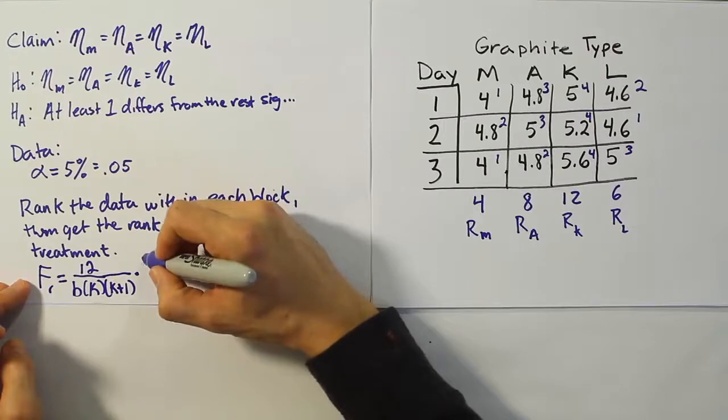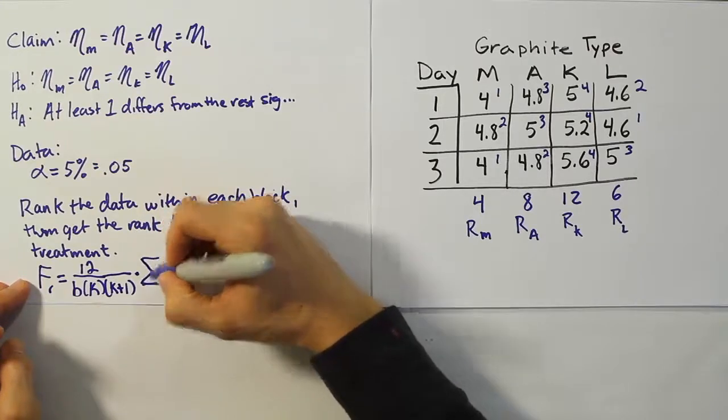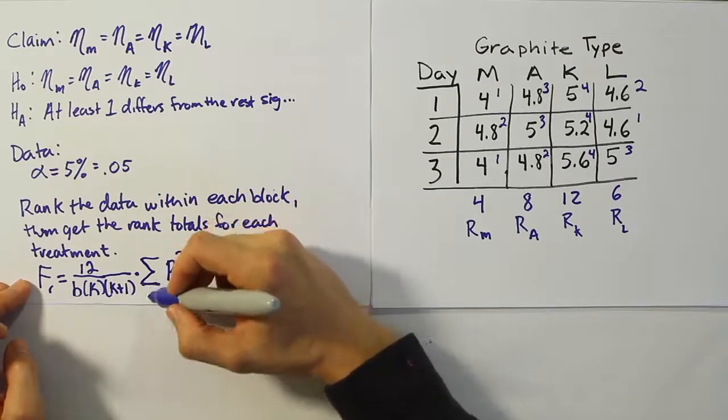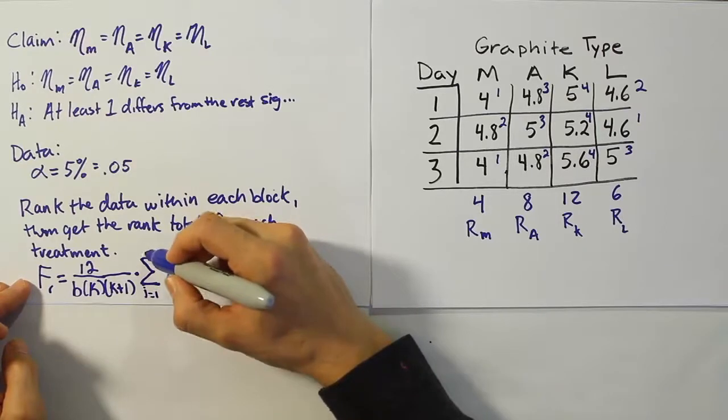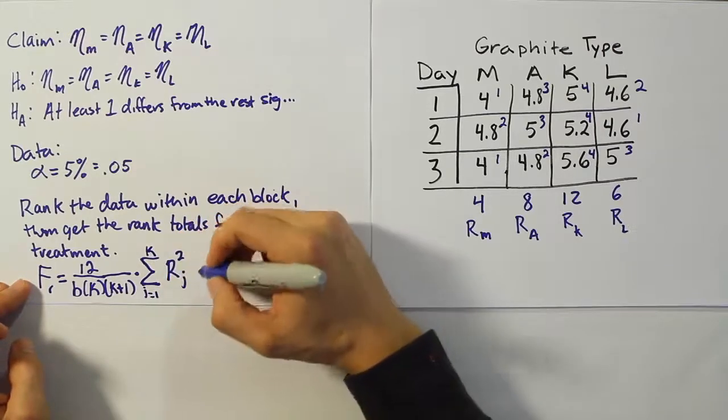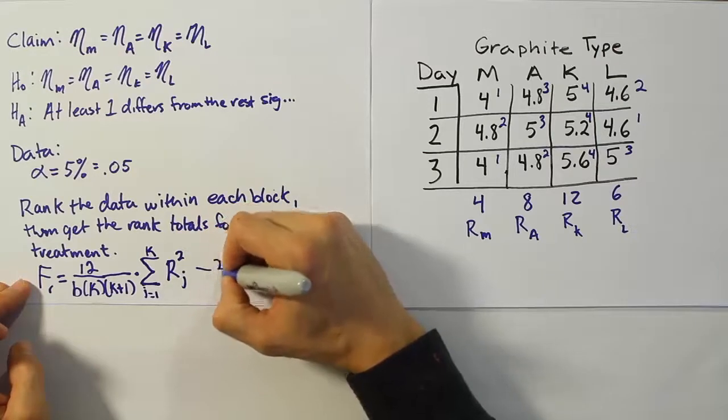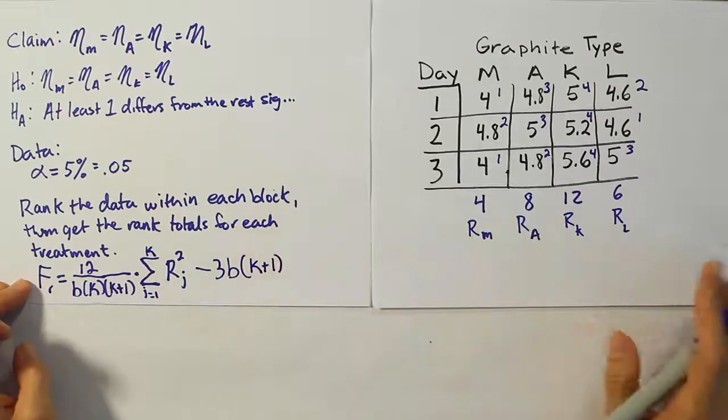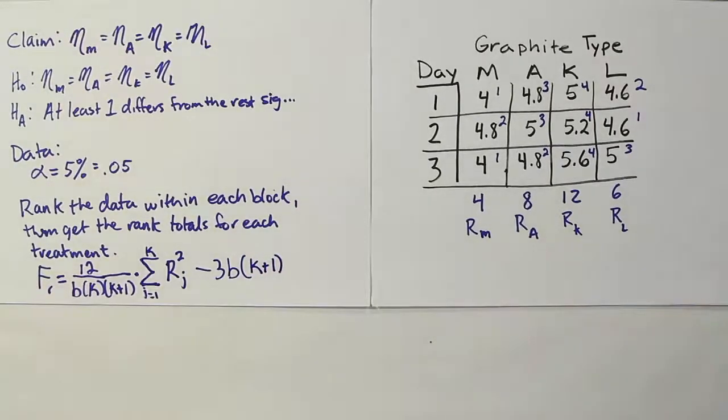And we're going to multiply that by the summation, the summation of the rank totals squared. So this is from J equals one up to K, the number of treatments we have, right? Then when we're finished with that, we'll do minus three times the number of blocks times the number of treatments plus one. So it looks a lot like the formula we had for the Kruskal-Wallis H test. It's very similar. It's also similar in the sense that it has its distribution as a chi-squared distribution, so we'll be using a chi-squared critical value to compare it against.